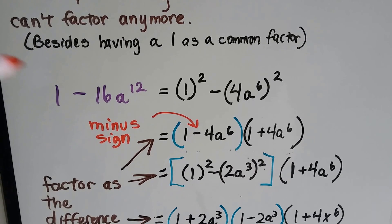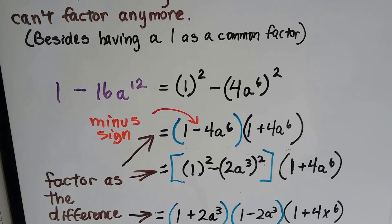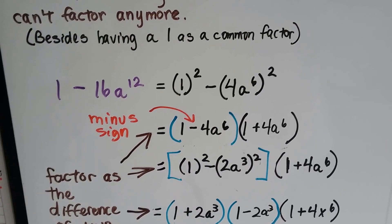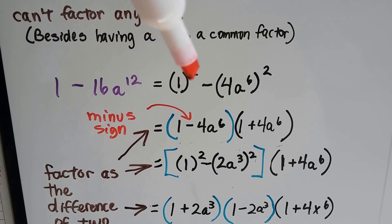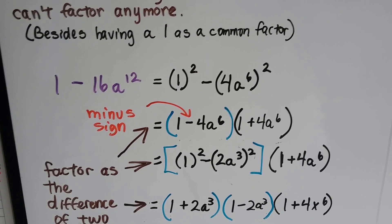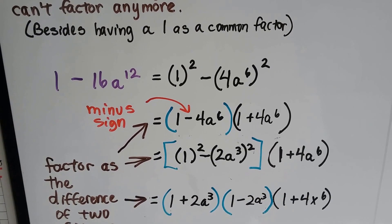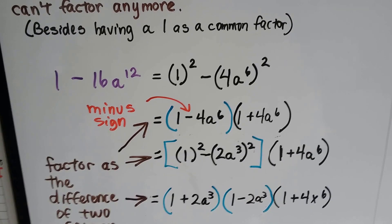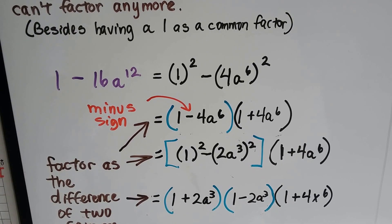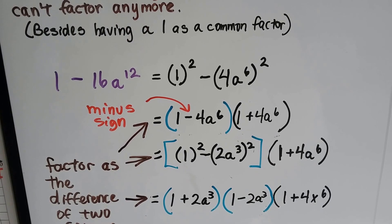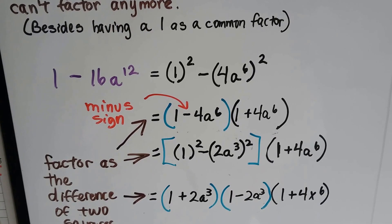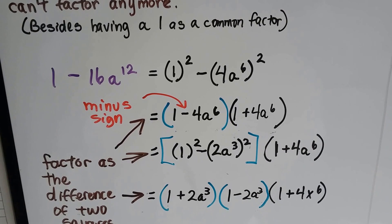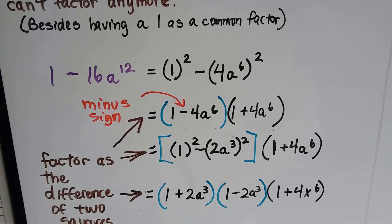Take a look at this one. We've got 1 minus 16a to the 12th. Well, 1 times 1 is 1, so that's 1 squared. And what times what would be 16a to the 12th? 4 times 4 would be the 16, and the product rule of exponents says we add the exponents. So that would be a 6 plus a 6 to get us to that 12. So we'd have 4a to the 6 squared.